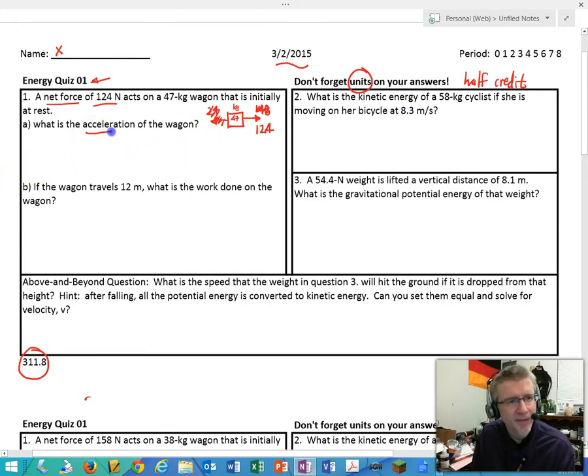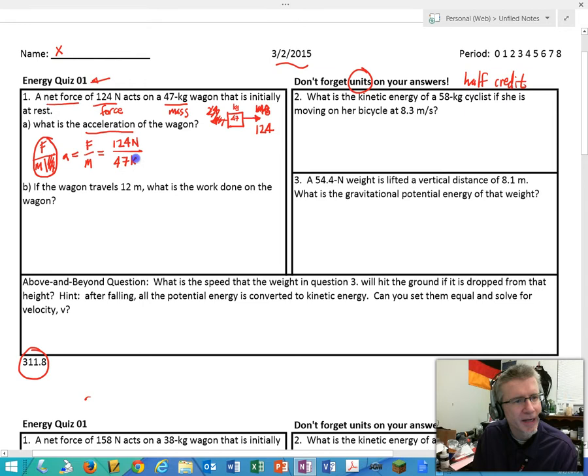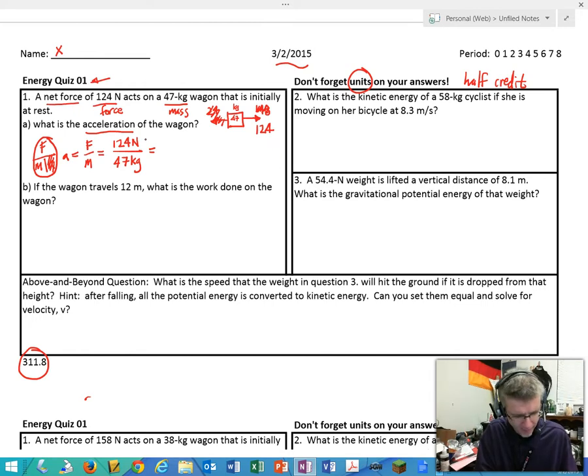What is the acceleration of the wagon? So what you're thinking is I have a mass, I have a force, and I want to know an acceleration. Sounds familiar, F equals MA. If I want A, I cross it out, I'm left with acceleration equals force divided by mass. That equals 124 newtons divided by 47 kilograms. That means, let me grab my calculator. If I divide that out, 124 divided by 47, 2.638.